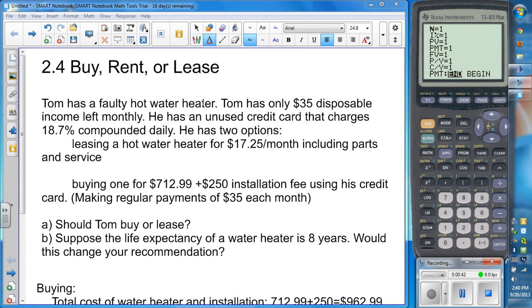Leasing a hot water heater, so leasing it means he doesn't own it, for $17.25 per month including parts and service. Or he can buy one for $712.99 plus a $250 installation fee using his credit card, but of course he can only make those regular payments of $35 each month.